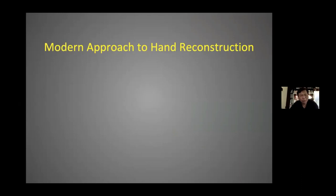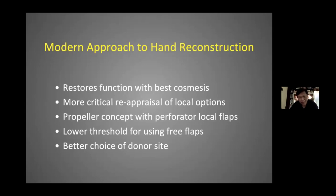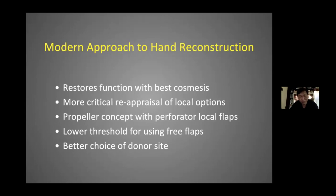The modern approach to hand reconstruction involves restoration of function with the best cosmesis. It requires a more critical reappraisal of local options, and the propeller concept works very well with perforator local flaps on the hand. You should have a lower threshold for using free flaps if that's the better choice — for example for the donor site — and it's less mutilating. So think big, think complex, and be brave. Thank you.